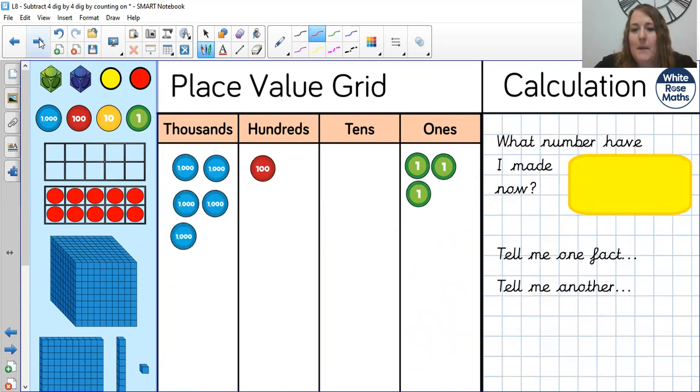Let's try with the next one. What number have I made here? And again, hopefully you can tell me I've made 5,100, 0 tens, 3 ones, 5,103. Again, if you can tell me a fact about this or think about it in your head and another and another.